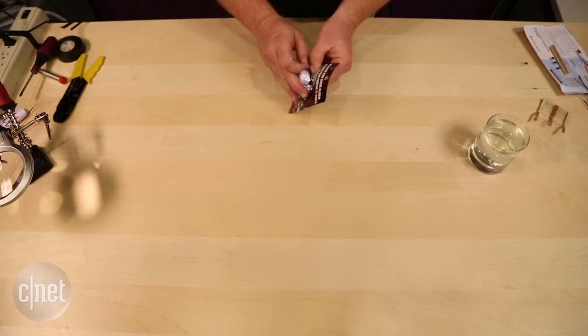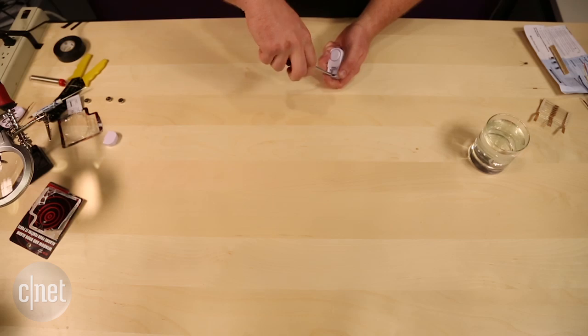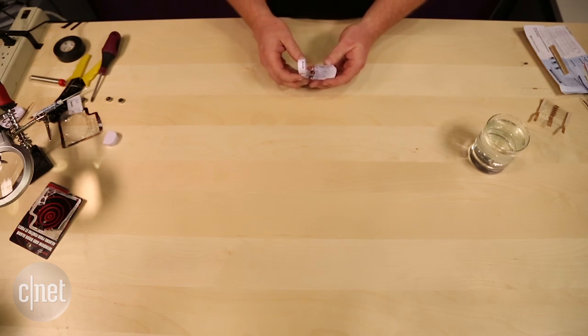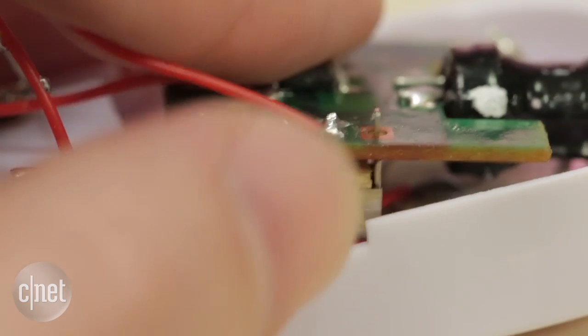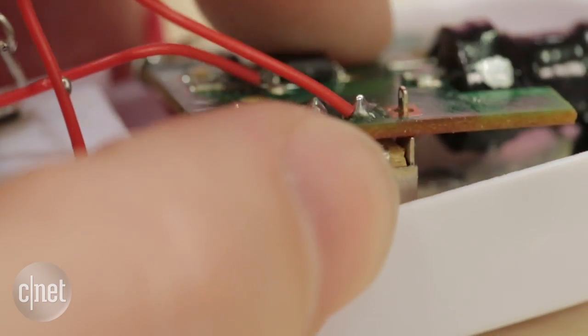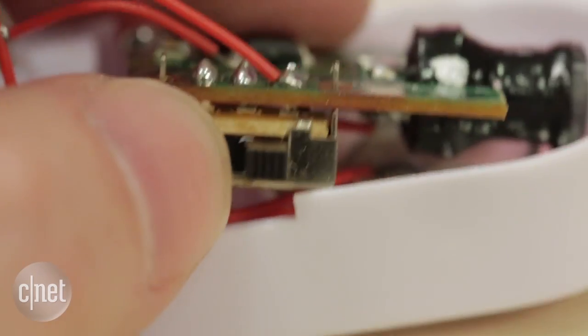So the first thing you can see Steve doing here is opening up the actual case of the door window sensor. Now it's really important here that you get a door window sensor that has a simple on off switch. If you get one that has more options or an LED light built in then you'll run into some problems with the circuitry.